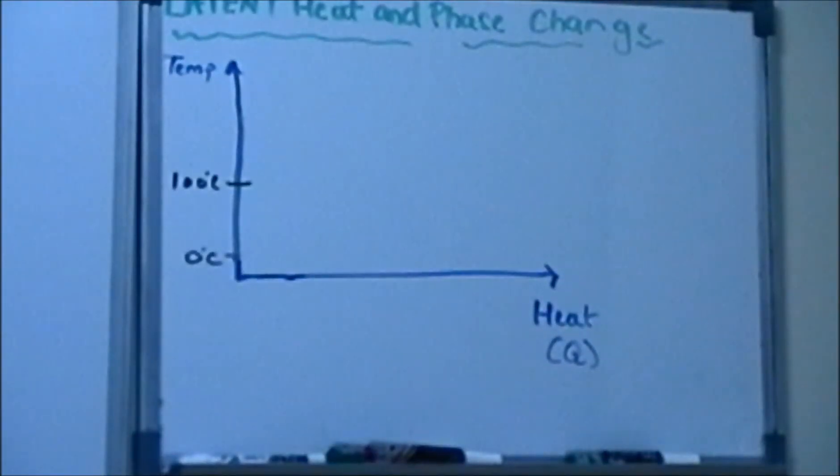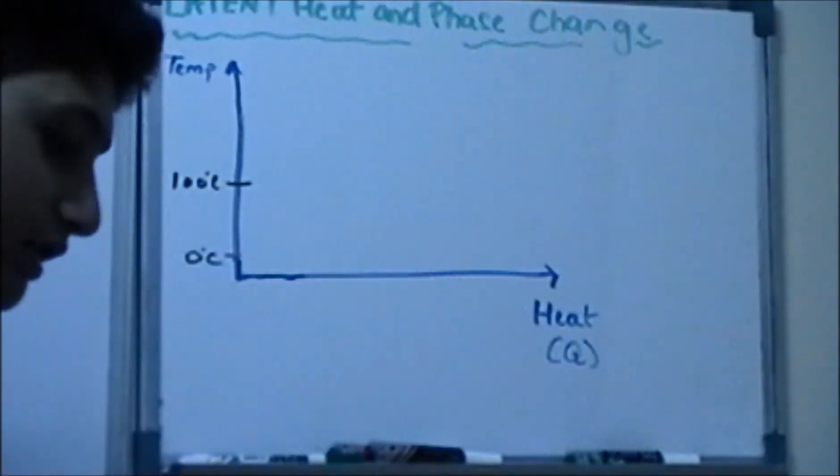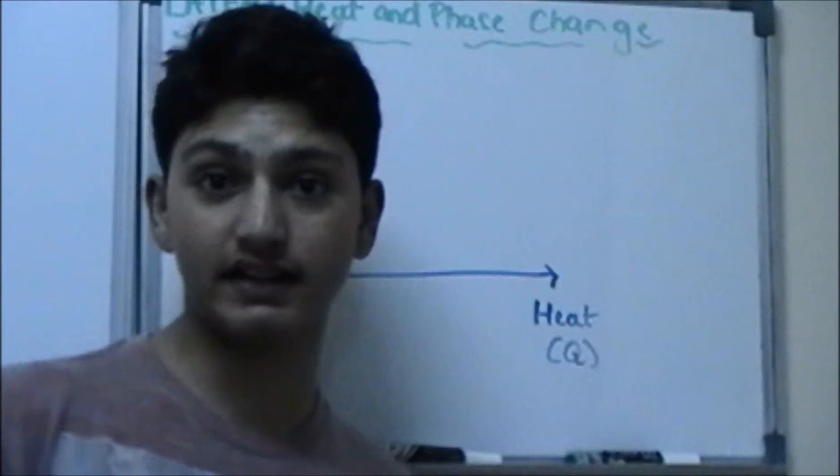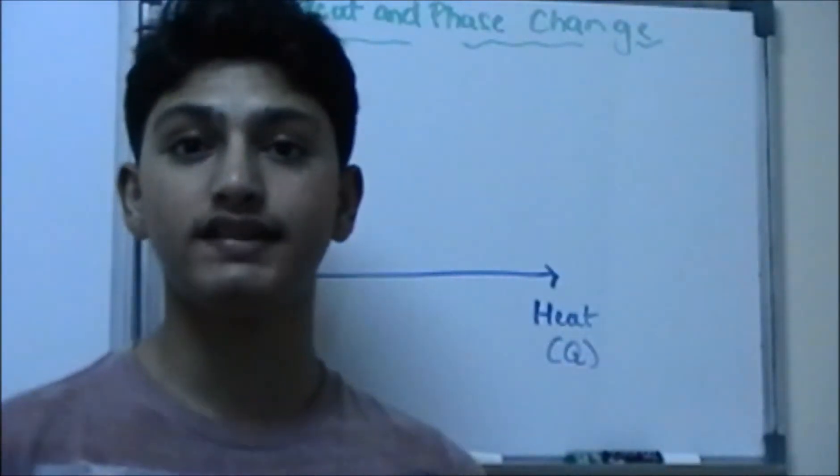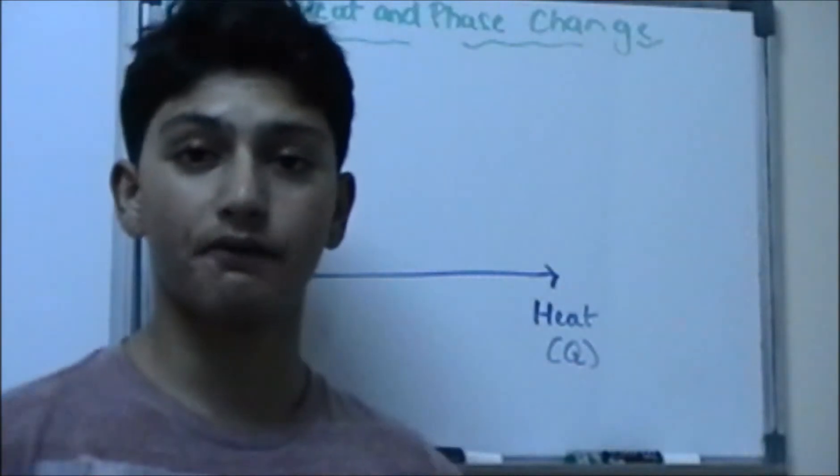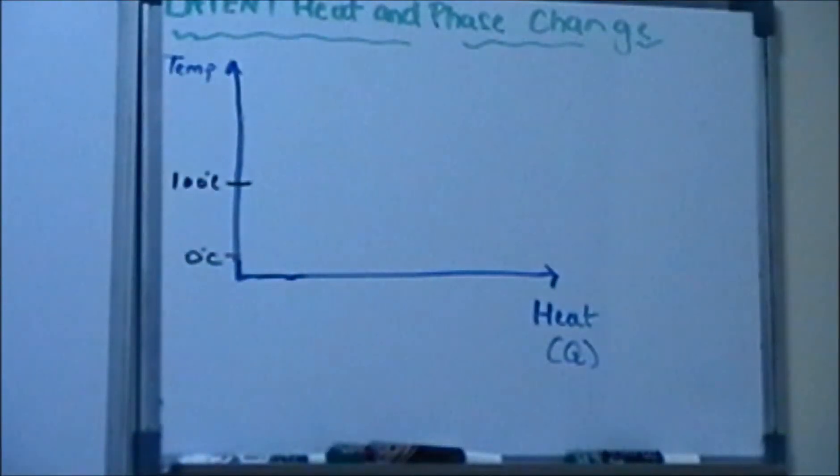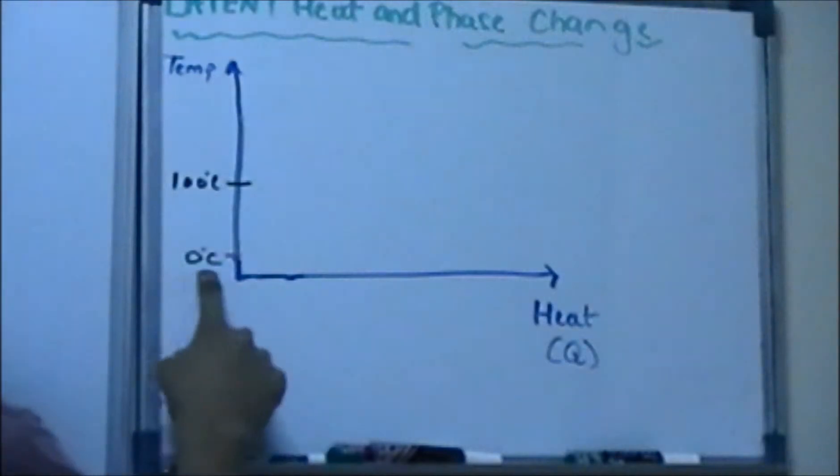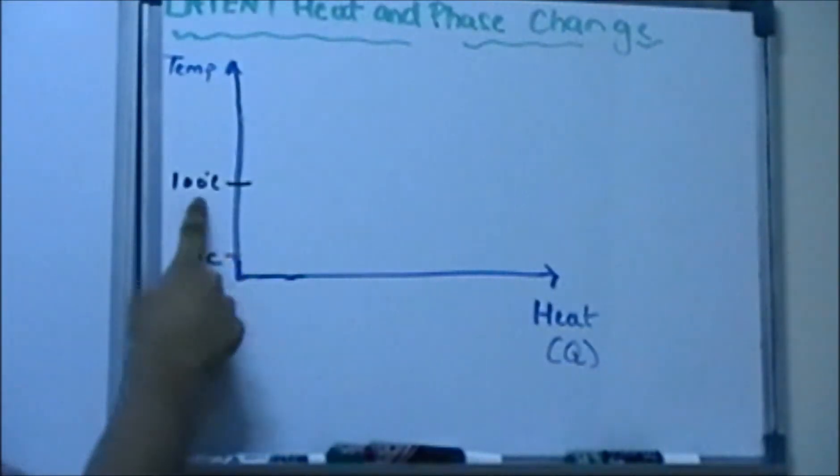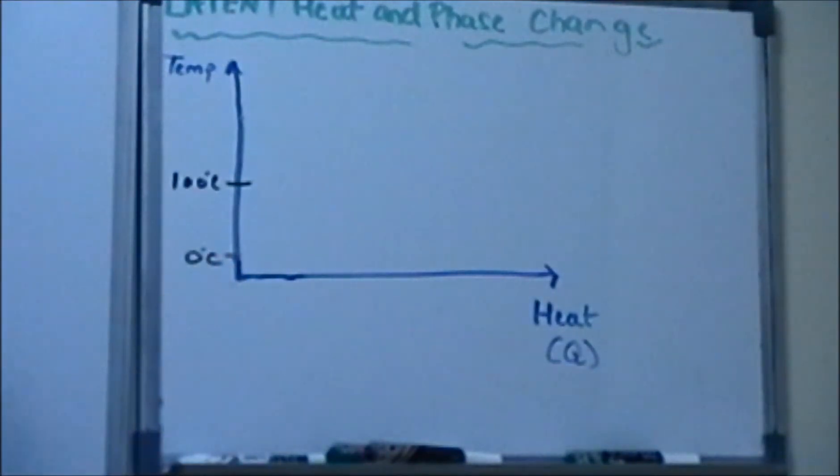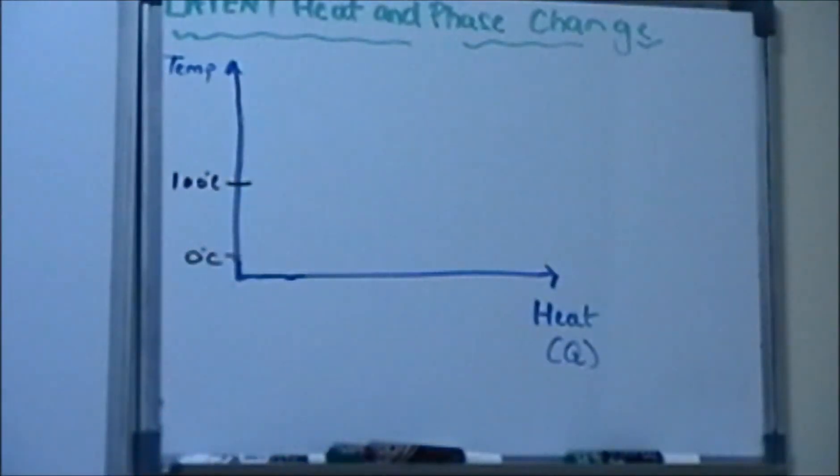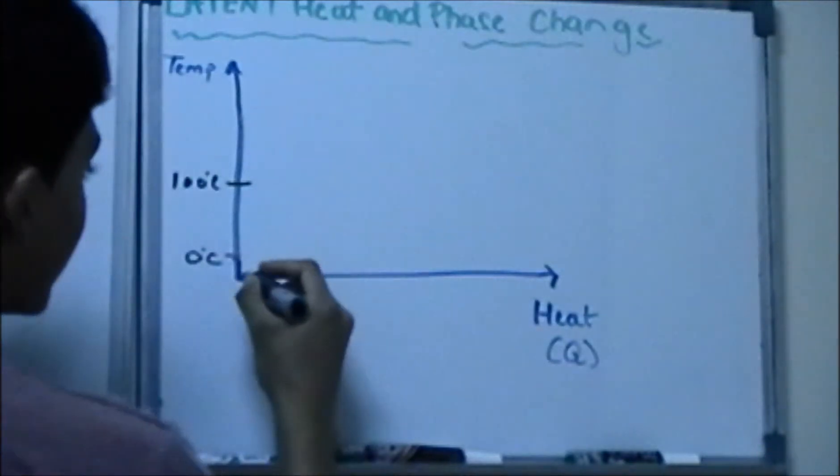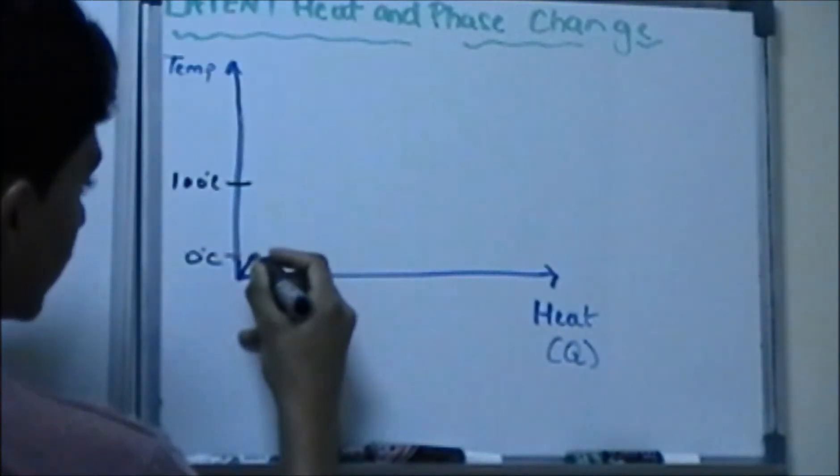So we took an example that ice is in a pot and we want to vaporize it. To understand the concept of latent heat. So here I have drawn a graph which I told you is the best way and the easiest way to demonstrate the phase change or illustrate the phase change. So let's say 0 degrees Celsius over here and 100 degrees Celsius is over here as you guys can see. Here we have heat which is represented as Q. Here we have temperature.